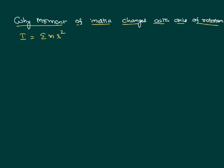It is defined as the summation of product of mass of each particle with the square of the distance from the axis of rotation. Let us imagine there is a body having mass that is rotated about a given axis as shown.